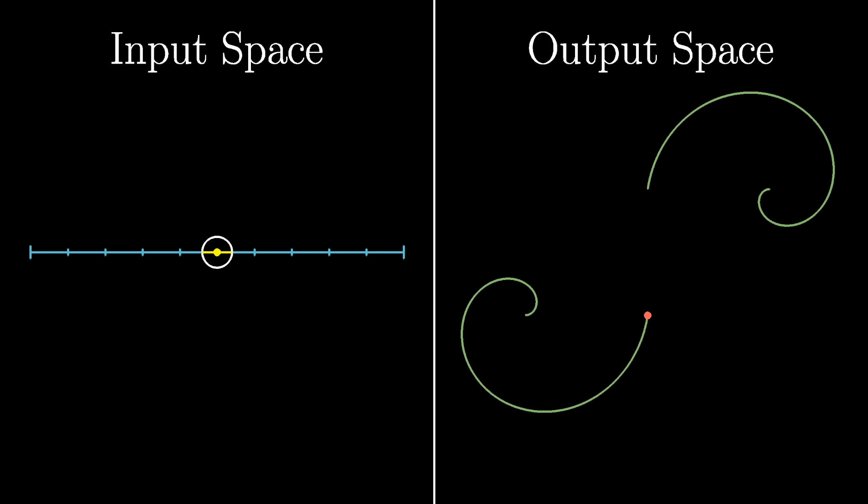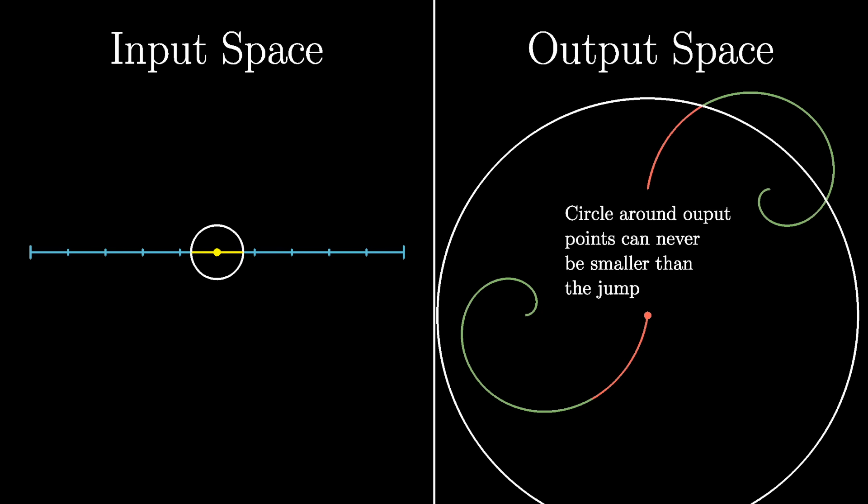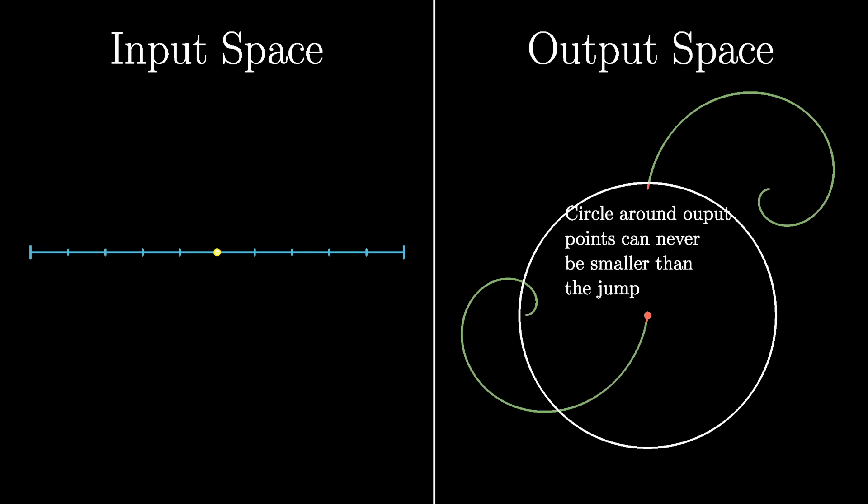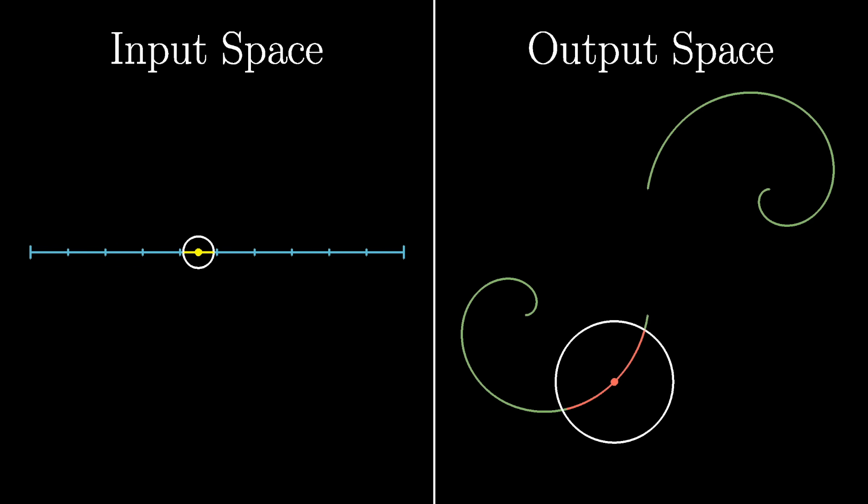But notice what happens when we go through this process at a point where the function jumps, drawing a circle around A, and looking at the input points within the circle, seeing where they map, and drawing the smallest possible circle, centered at B, containing those points. No matter how small the circle around A, the corresponding circle around B just cannot be smaller than that jump. For this reason, we say that the function is discontinuous at A if there's any lower bound on the size of this circle that surrounds B. If, on the other hand, the circle around B can be made as small as you want, with sufficiently small choices for circles around A, you say that the function is continuous at A. A function as a whole is called continuous if it's continuous at every possible input point.